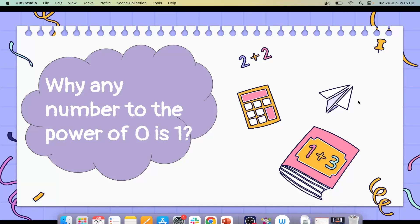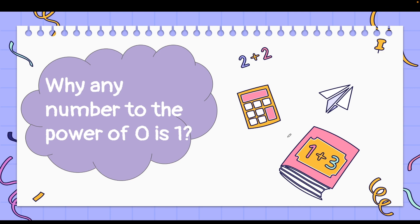Hello everybody and welcome to yet another wonderful video on Bhanzu. This is your educator Haripriya, and today I am here to answer the question I get the most, especially when I'm teaching exponents and powers: why is any number raised to the power zero equal to one? How is it mathematically possible?